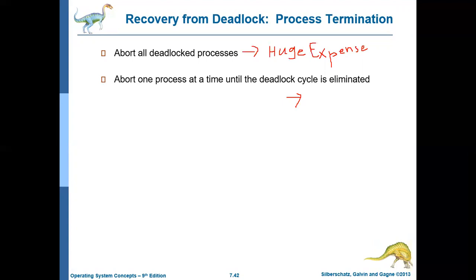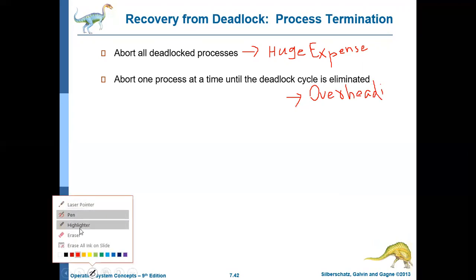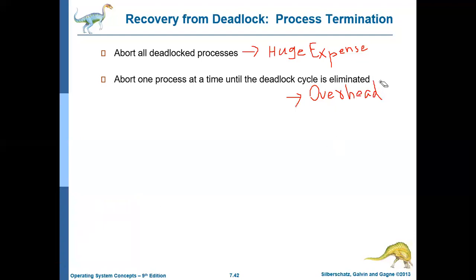So what kind of overhead does it create? First you have to identify the process to be terminated. Then after aborting a particular process, you should run the deadlock detection algorithm again to check whether the system is still in the deadlock state or not. Like that, after aborting every process, the deadlock algorithm has to be invoked to detect whether some of the processes are still in a deadlock state or not. So this is the overhead incurred by the second method. Basically these are the two ways by which processes can be terminated to recover from the deadlock.